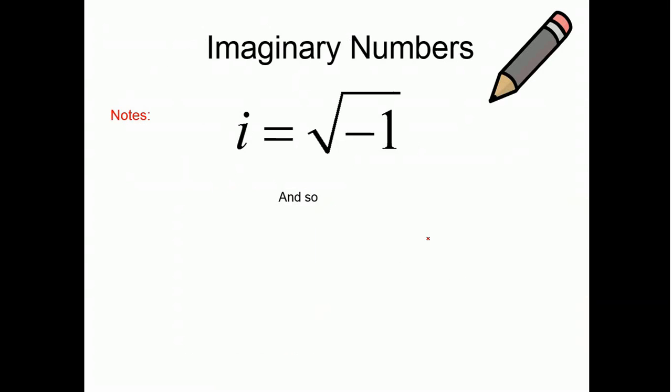So, here's what imaginary numbers are. i equals the square root of negative 1. So, i is for imaginary. So, basically, if you have a negative 1 under a square root, you can translate that to i. So, i squared, then, is technically negative 1.